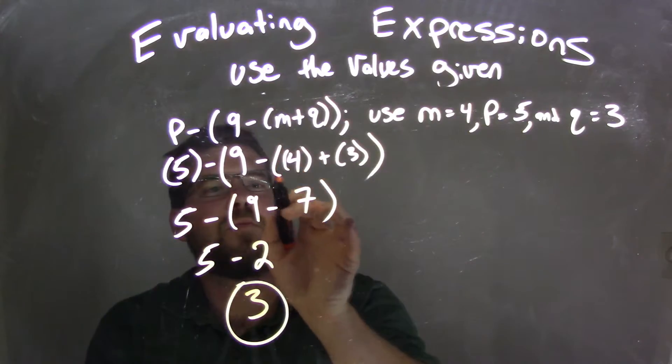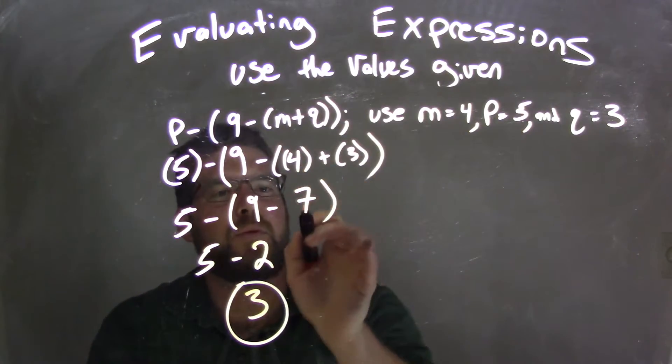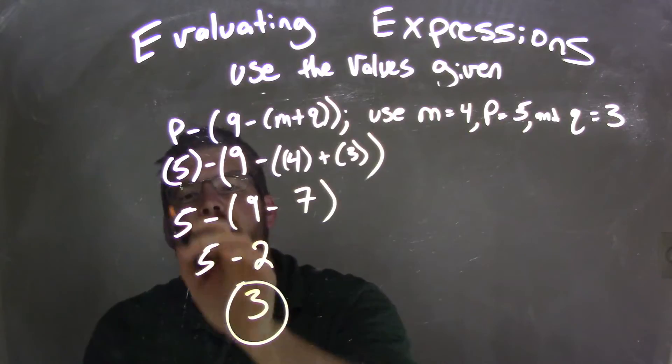So then we dealt with these set of parentheses first, 4 plus 3 goes to 7, 9 minus 7 came out to be 2, and lastly, 5 minus 2 is 3.